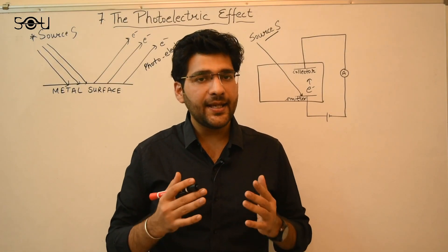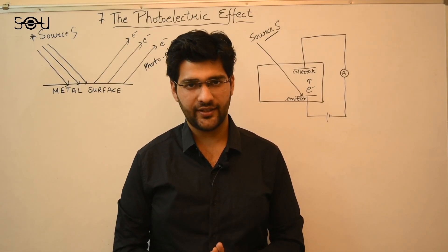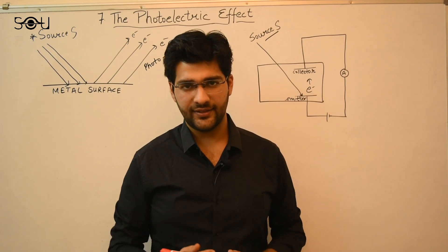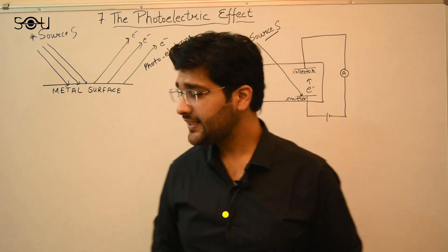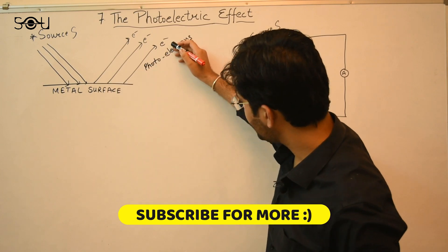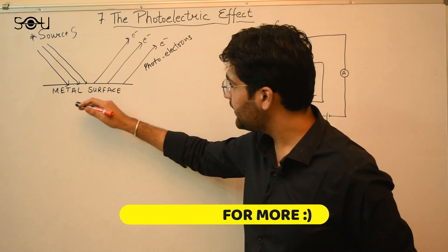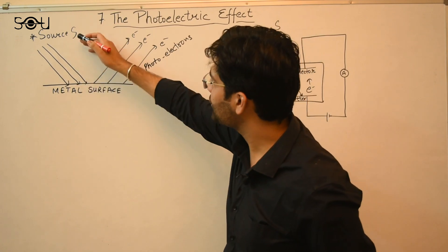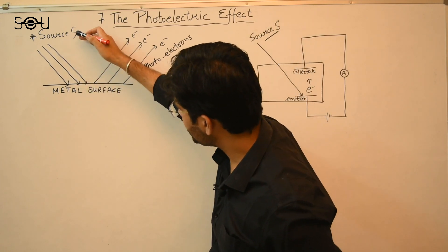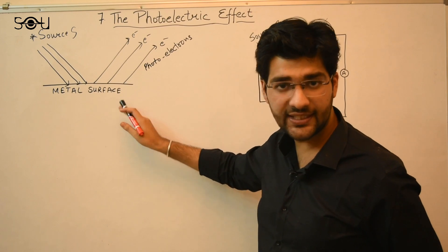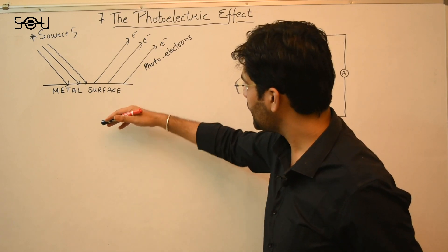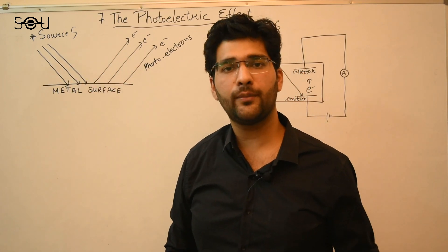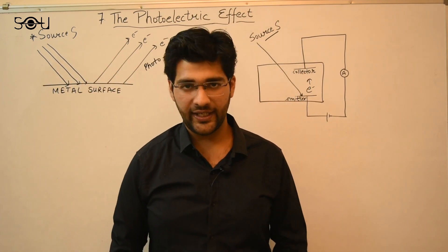Albert Einstein himself did not discover the photoelectric effect. It was discovered back in 1887 by Frank Hertz. The photoelectric effect is the emission of electrons from the surface of a metal when light shines on that surface. We have a light source S, and light from this source falls on a metal surface, knocking off electrons — this whole phenomenon is known as the photoelectric effect.